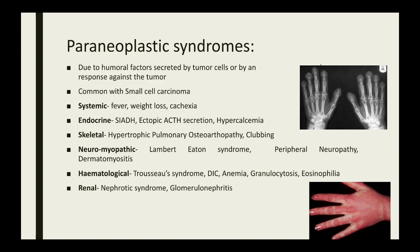Patients can have peripheral neuropathy and dermatomyositis. There can also be hematological manifestations like Trousseau's syndrome, where patients will have migratory venous thrombophlebitis. Patients can have disseminated intravascular coagulation, anemia, and eosinophilia. Renal manifestations can include nephrotic syndrome and glomerulonephritis.